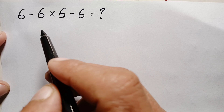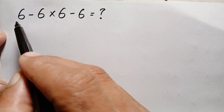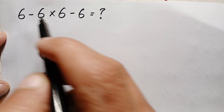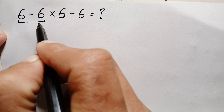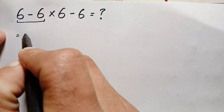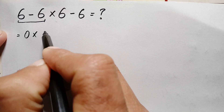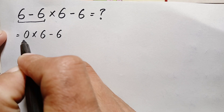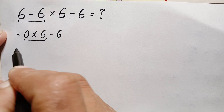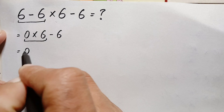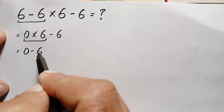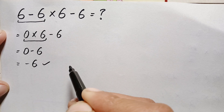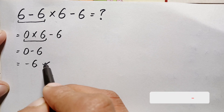Hello everyone, you are welcome. What is the correct answer of 6 minus 6 times 6 minus 6? Here it is — 6 minus 6 is simply 0, so this is 0 times 6 minus 6. Now we have two operations: multiplication and subtraction, so 0 times 6 is simply 0, minus 6. Finally, 0 minus 6 is simply minus 6. But remember, this answer is totally wrong.